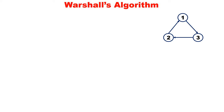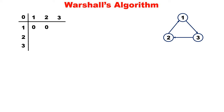Let us take the same graph — three vertices and three edges. Let us first find the adjacency matrix. 1 to 1: no edge, 0. 1 to 2: no edge, 0. 1 to 3: there is an edge, 1. 2 to 1: there is an edge, 1. 2 to 2: no edge, 0. 2 to 3: no edge, 0. 3 to 1: no edge, 0. 3 to 2: there is an edge, 1. 3 to 3: no edge, 0. So we have written the adjacency matrix.